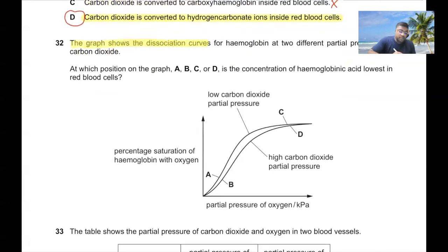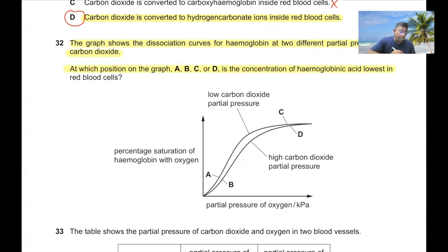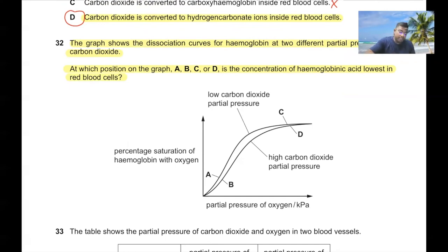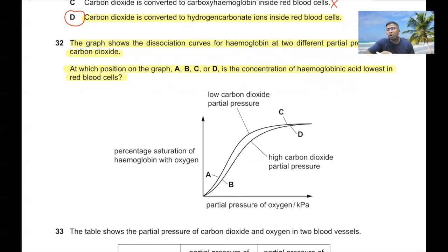Question 32: The graph shows dissociation curves for haemoglobin at two different partial pressures of CO₂. The concentration of haemoglobinic acid is lowest in the lungs, where blood loses H⁺ ions that react with hydrogencarbonate ions to produce water and carbon dioxide. So option C is the correct answer.